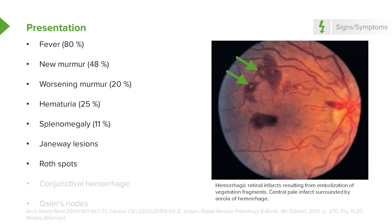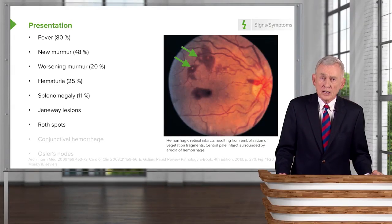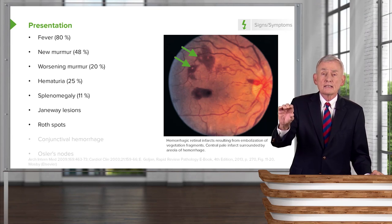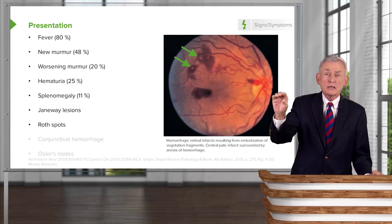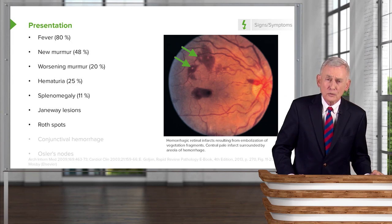There are other conditions in which you can find Roth spots — profound anemia, leukemia, and certain connective tissue diseases like lupus. But when you see them, you want to think of endocarditis and draw blood cultures. Unfortunately, the use of the ophthalmoscope is in decline. When you look at a typical workup and see HEENT within normal limits, one wonders if WNL sometimes means 'we never looked.'